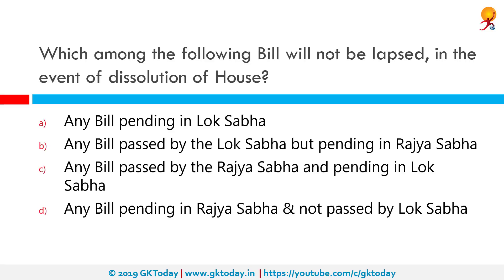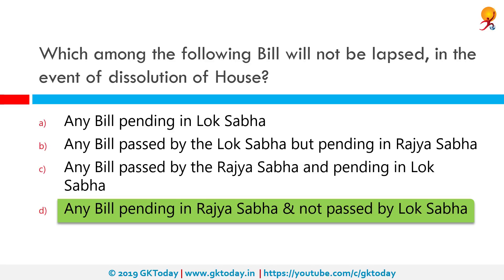Which among the following bills will not lapse in the event of dissolution of the house? The correct answer is any pending bill in Rajya Sabha not passed by Lok Sabha. There are particular cases when bills don't lapse: a bill pending in Rajya Sabha but not passed by Lok Sabha does not lapse; a case where the President has notified the holding of a joint sitting before the dissolution of Lok Sabha means the bill will not lapse; a bill passed by both houses but pending assent of the President will not lapse; a bill passed by both houses but returned by the President for reconsideration does not lapse; and some pending bills and all pending assurances to be examined by the Committee on Government Assurances do not lapse on dissolution of Lok Sabha.